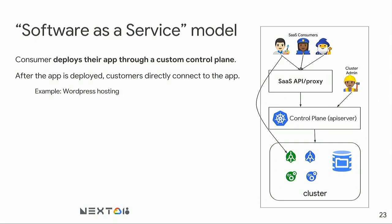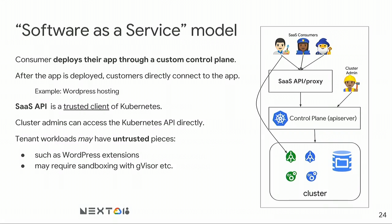An example is WordPress.com — when you create a blog, WordPress.com creates pods for you and you talk directly to your WordPress admin page without seeing Kubernetes. The cluster admin has access to the Kubernetes API, and there is a SaaS API as a trusted client. In this case, tenant workloads can have untrusted pieces, like WordPress extensions that allow arbitrary code execution, so you may require sandboxing with GVisor or another runtime.